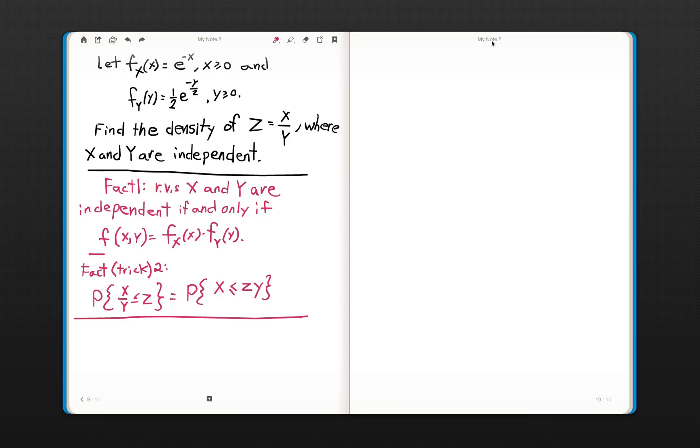Welcome back, my friends. This is Dr. Mee with the Actuarial Academy, and I'd like to work a fairly complex and tedious actuarial probability type problem for you, and it involves finding the density of the ratio of two independent random variables.